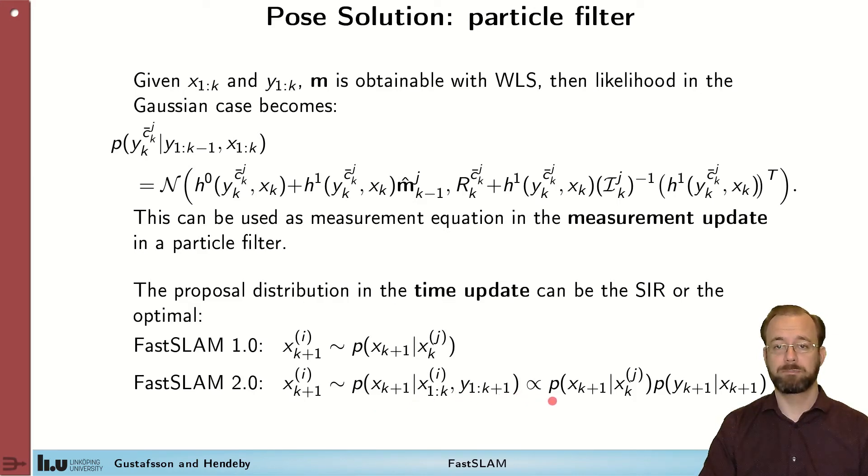And we can see that it's partly the same prior as in FastSLAM 1.0, but also including the measurement likelihood. This makes the particle counts better, so we get particles in a better place, so we need fewer particles.